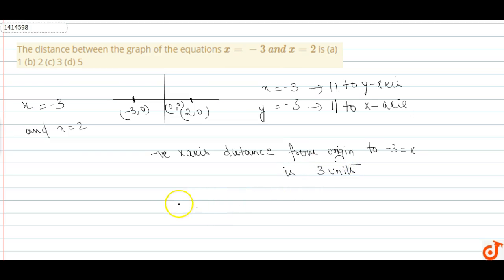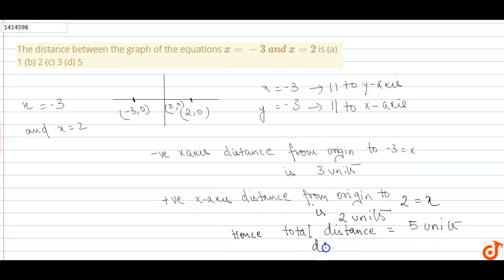And positive x-axis distance from origin to 2 is equal to 2 units. Hence total distance is 5 units. Hence our answer is D, 5 units.